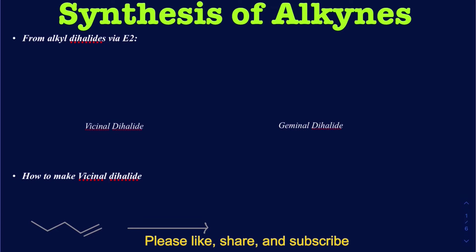We can have two different types of dihalides: a vicinal dihalide and a germinal dihalide. It's important to know the difference between those two. In a vicinal dihalide you have the halogens on adjacent carbons, but in a germinal dihalide they are on the same carbon — whether it's the middle carbon or the terminal carbon — that's called a germinal dihalide.